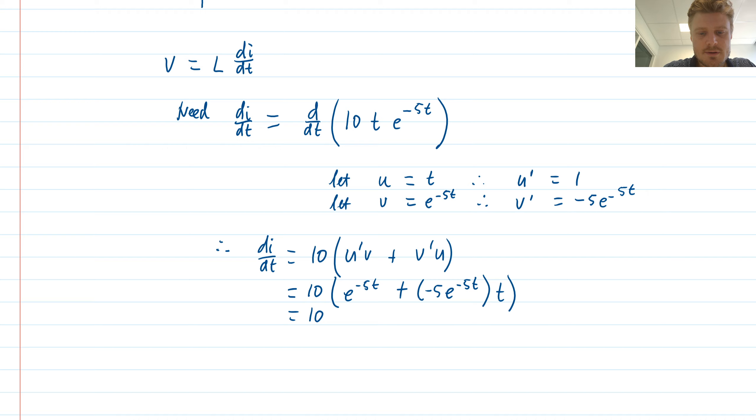We can simplify this a little, so I'm just going to expand my brackets. The 10 will come back in, and I will get 10 e to the minus 5t minus 50t e to the minus 5t.